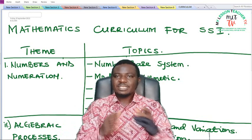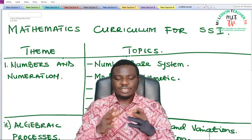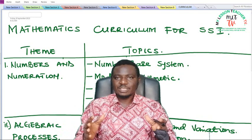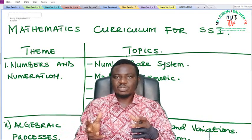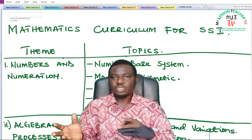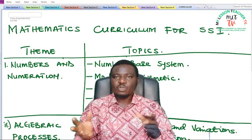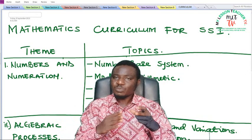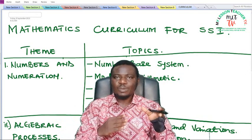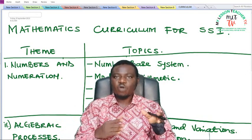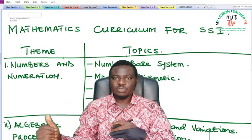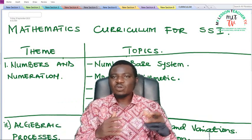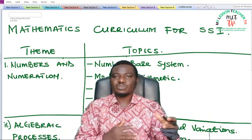This is where we mostly have issues with students when it comes to the transition from the junior secondary school to the senior secondary school. As a result of not being able to complete the scheme of work for the junior secondary school, it is always a problem starting that of the senior secondary school.